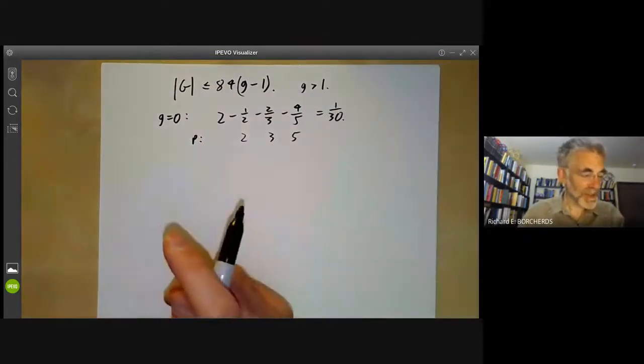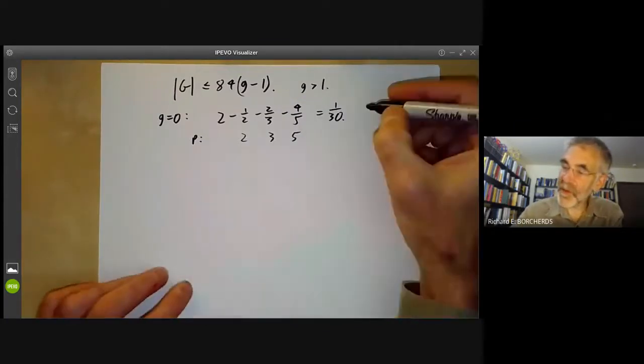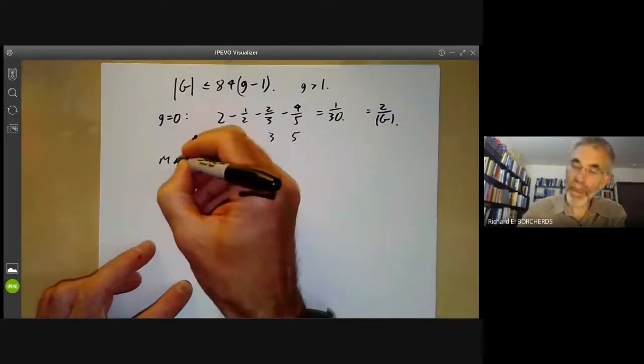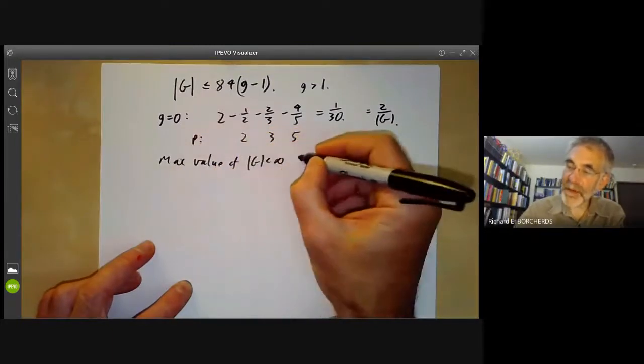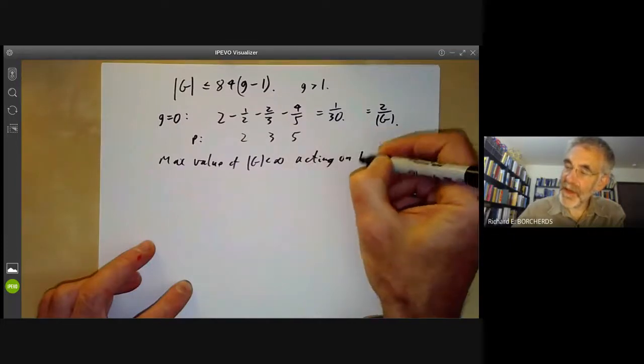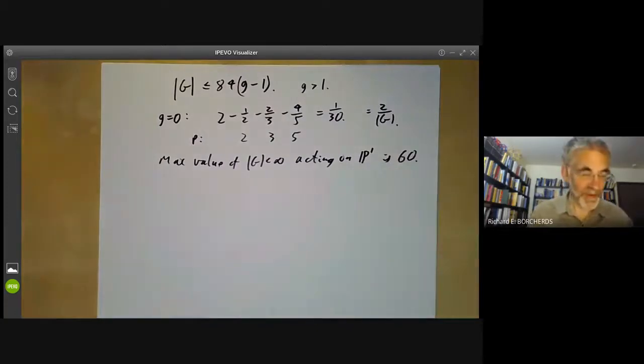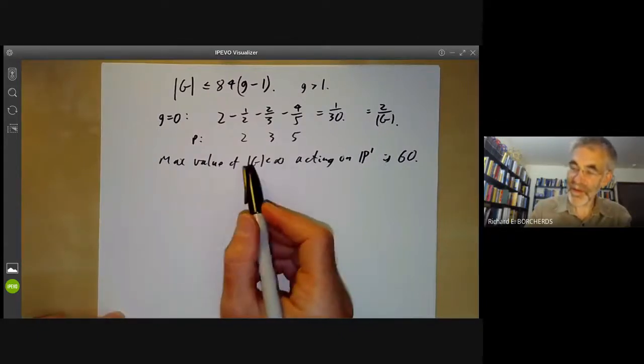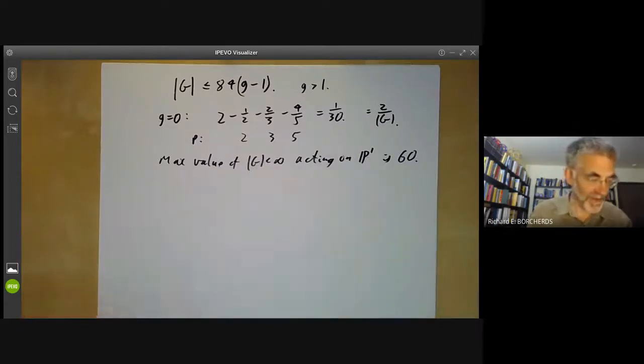And since this number is equal to two over the automorphism group, we see that the maximum value of G for a finite group of automorphisms acting on the projective line is 60, and in fact there is a group of order 60 acting on the projective line. Of course, this is only the largest finite value, the full group of automorphisms of the projective line is in fact infinite, so there are plenty of infinite examples.